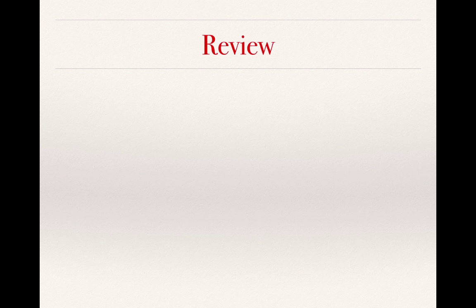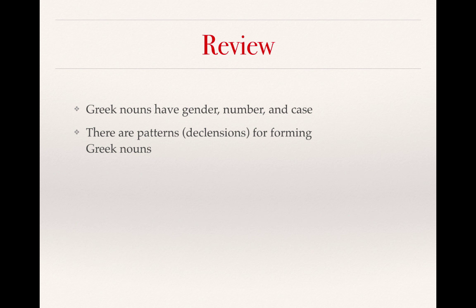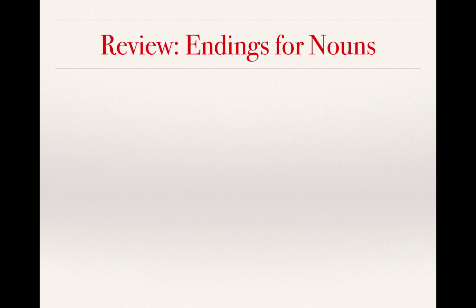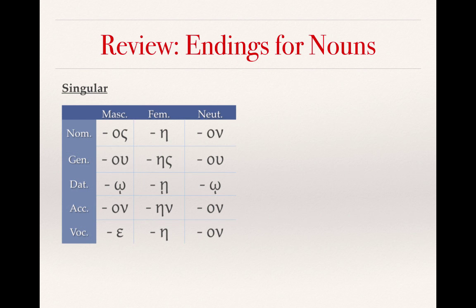Let's start again with a brief review. Remember that Greek nouns have gender, number, and case, and that there are patterns or declensions for forming Greek nouns that indicate gender, number, and case. The formation of the definite article and adjectives follow these basic patterns with slight modifications. Here is a chart providing the basic endings for all three forms of those nouns — masculine, feminine, and neuter — with masculine and neuter being second declension and feminine being first declension.